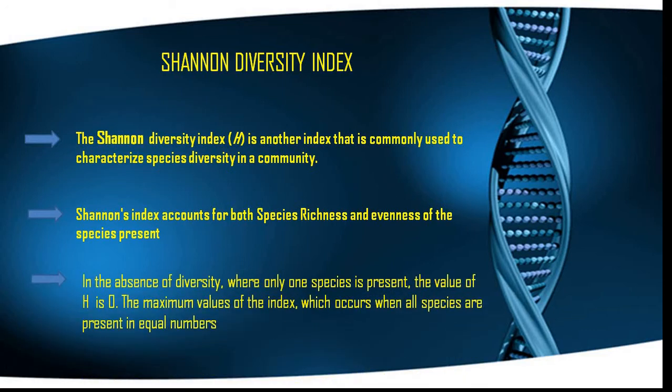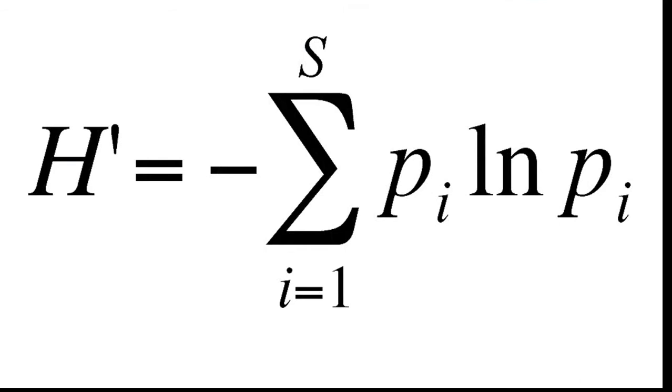The value of the Shannon Diversity Index close to zero means diversity is very less — meaning only a single type of species is present. For a higher value of the Shannon Diversity Index, it means there are more different species present.